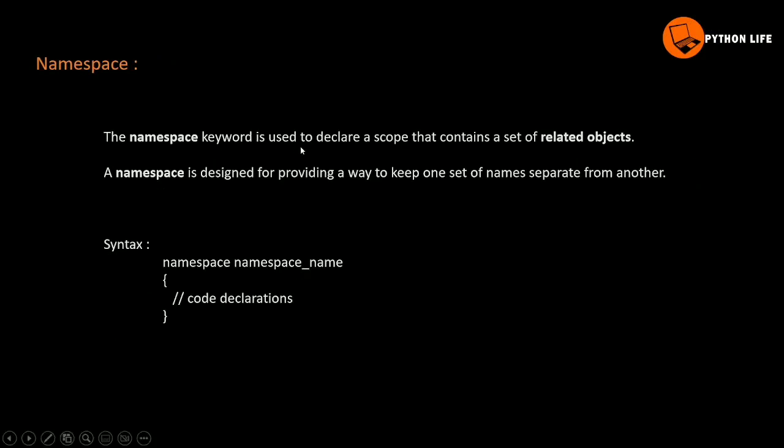The namespace keyword is used to declare a scope that contains a set of related objects. Objects may be classes or methods, etc.